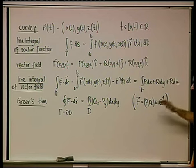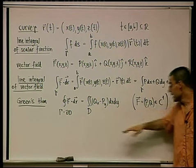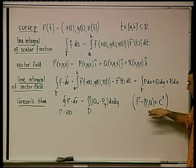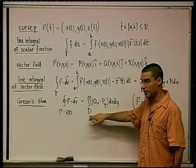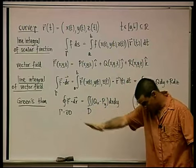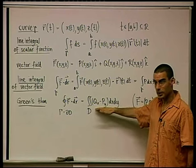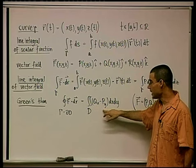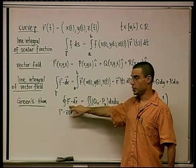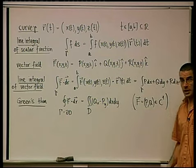Then we had Green's theorem, which only applies to the plane. The domain is a planar domain D, and F is a field with two components P and Q in x and y. Green's theorem says: the double integral over the domain of (Q_x − P_y) equals the line integral over the boundary of D of the original field F·dr. This is the summary of everything we did with curves.